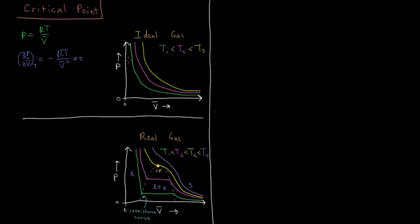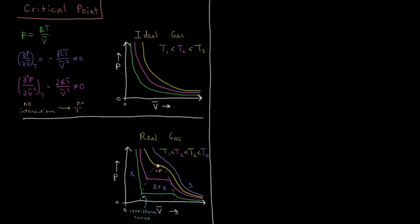So there's no point where our pressure doesn't change if our molar volume changes. We can compress it an infinite amount and it still has the same behavior — there's still this directly proportional inverse relationship between the two. Similarly, if we take the second derivative of pressure with respect to molar volume, that's also never going to be zero. We get 2RT over V-bar cubed, which again is not equal to zero at any finite value of molar volume. Because there are no interactions in an ideal gas, there's never any point where we're going to have a liquid — it can stay gas indefinitely.